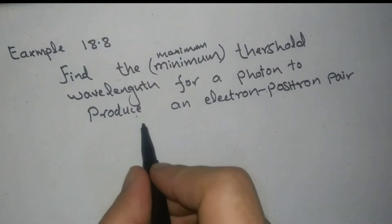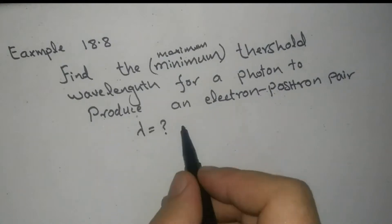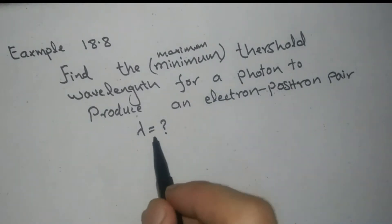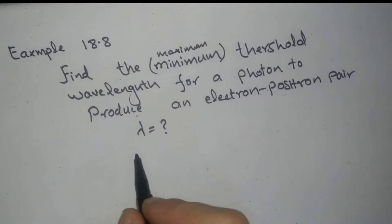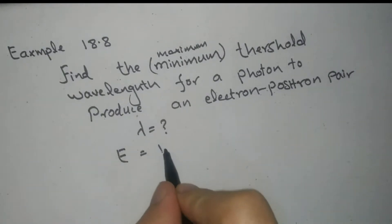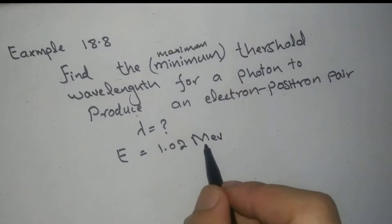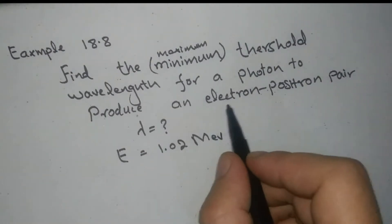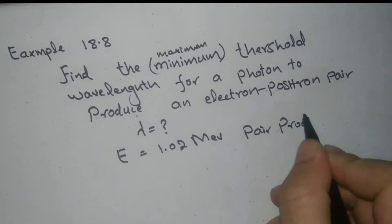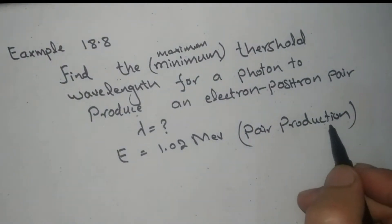The threshold wavelength for a photon to produce an electron-positron pair is lambda, which is unknown. We know that the minimum energy required for a photon or gamma ray to produce an electron-positron pair is 1.02 mega electron volts. This is the minimum energy required for pair production.